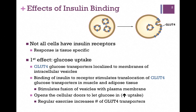The first effect of insulin binding is the uptake of glucose, so that we can lower the glucose level in the bloodstream. The GLUT4 is a type of glucose transporter that's localized to membranes of intracellular vesicles, as illustrated in the figure at the top of our screen. The GLUT4 receptors are shown in blue, and they're localized to these vesicles, so they're not on the surface of the cell normally.